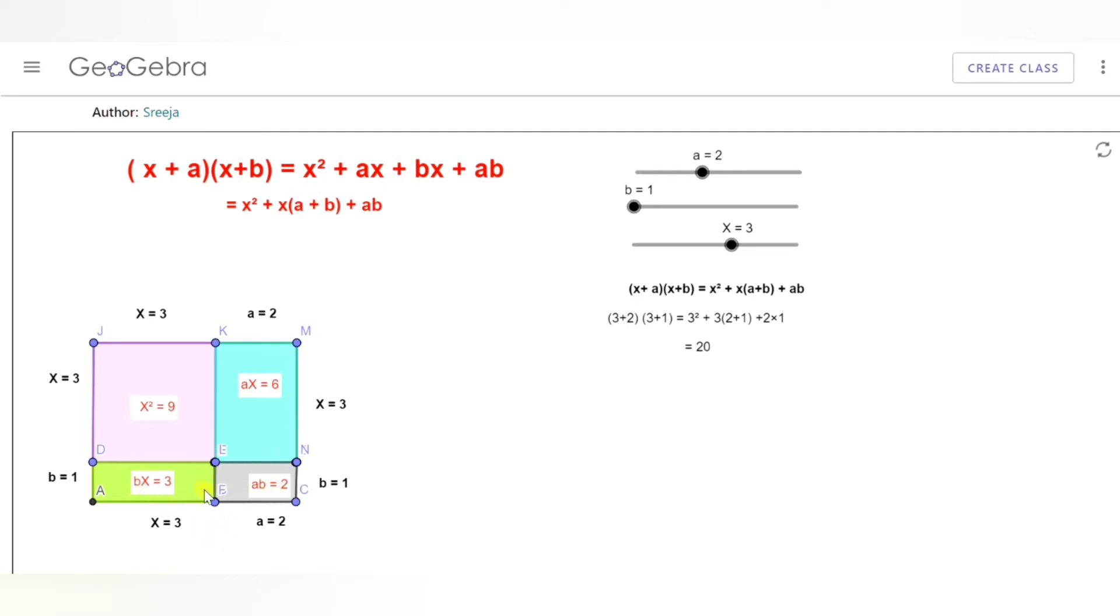Now we have ENCF with sides a and b, so its area would be ab.